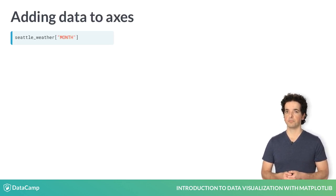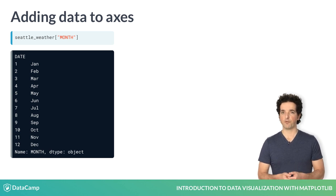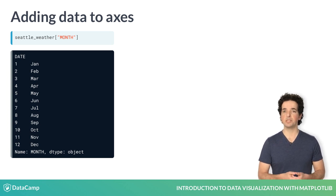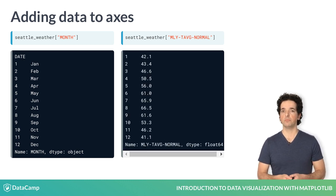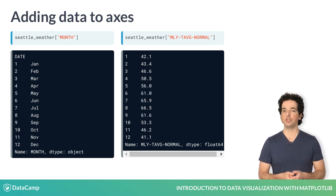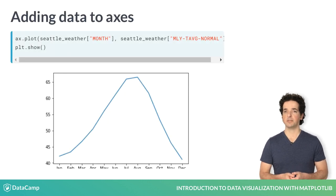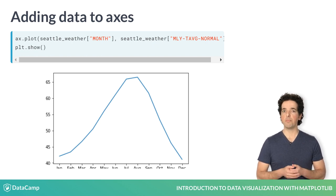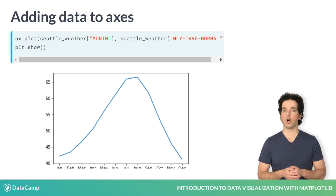No data has been added yet. Let's add some data to our figure. Here is a data frame that contains information about the weather in the city of Seattle in the different months of the year. The month column contains the three-letter names of the months of the year. The monthly average normal temperature column contains the temperatures in these months in Fahrenheit degrees averaged over a 10-year period. To add the data to the axes, we call a plotting command. The plotting commands are methods of the axes object. Here we call the method called plot, with the month column as the first argument and the temperature column as the second argument.